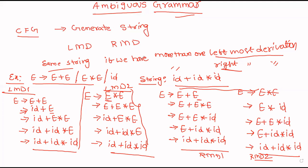No need to prove both leftmost and rightmost. We have to prove more than one leftmost derivation or more than one rightmost derivation — then obviously that is an ambiguous grammar. Thank you.